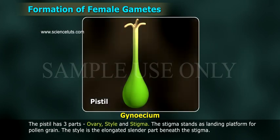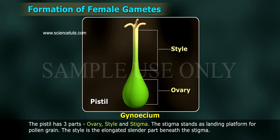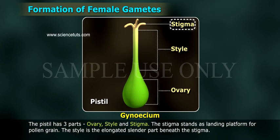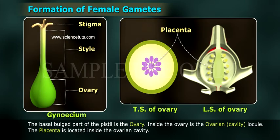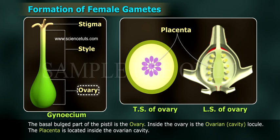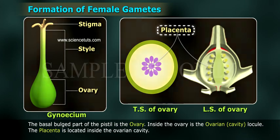The pistil has three parts: ovary, style, and stigma. The stigma acts as a landing platform for pollen grains. The style is the elongated slender part beneath the stigma. The basal bulged part of the pistil is the ovary. Inside the ovary is the ovarian cavity, called the locule. The placenta is located inside the ovarian cavity.